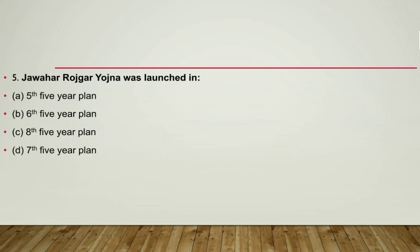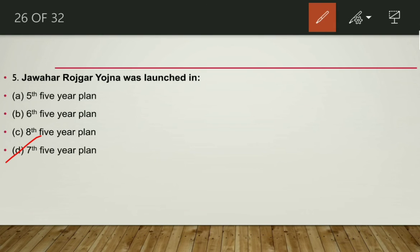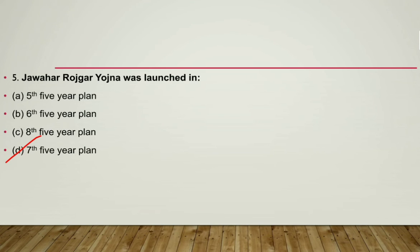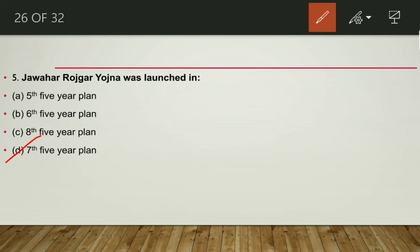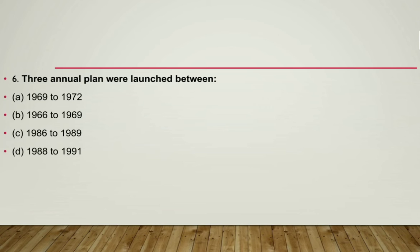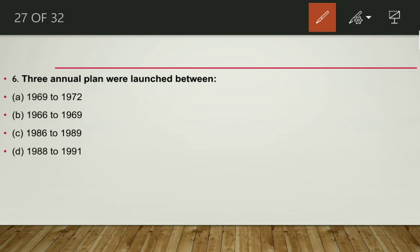Jawahar Rojgar Yojana was launched in the Seventh Five Year Plan, with a plan period of 1985 to 1990. The three annual plans were launched between 1966 to 1969. The reason for these three annual plans was severe drought, the Indo-Pak war, and Chinese aggression. The answer is 1966 to 1969.